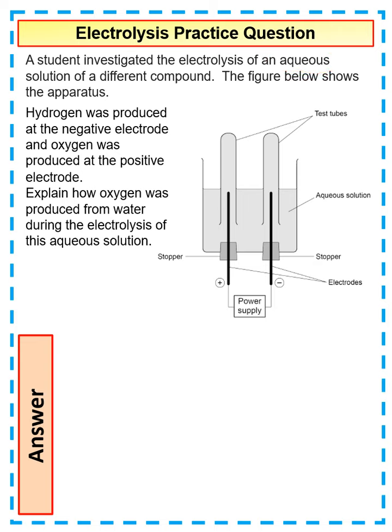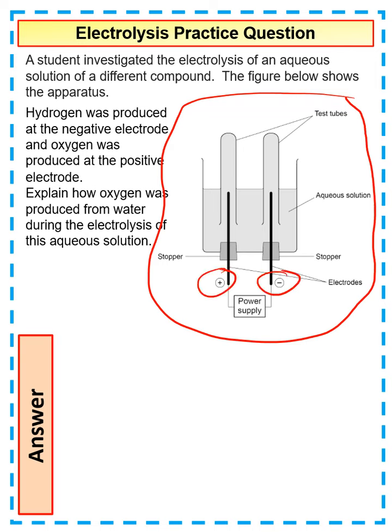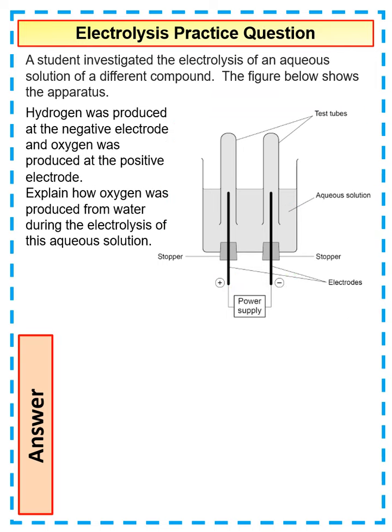So the figure below shows the apparatus. Quite often, they will give you a diagram that looks something like that. So we can see that we've got a positive electrode, a negative electrode, and in between it, you've got the aqueous solution. So the liquid that the electrolysis is going to be carried out on - the electrolyte.